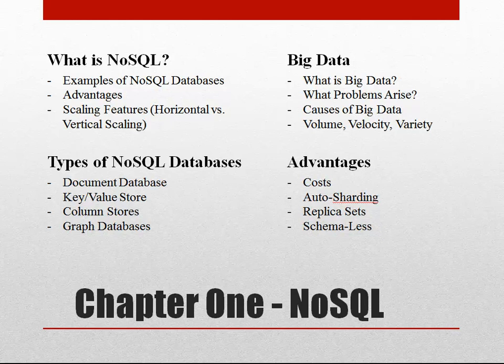In chapter one we'll take a look at NoSQL in general and what it is. We'll look at some examples of NoSQL databases, talk about the advantages, and look at the scaling features such as horizontal scaling as opposed to vertical scaling with traditional relational databases. We'll also take a look at big data: what it is, what problems can arise from it, where it comes from, and we'll talk about the volume, velocity, and variety of data.